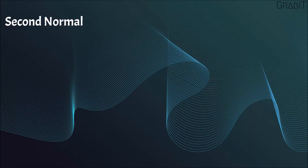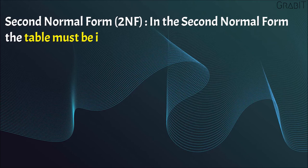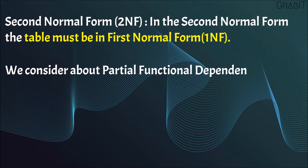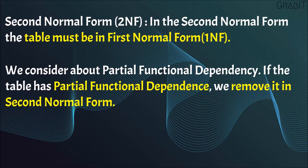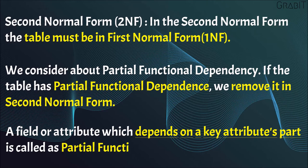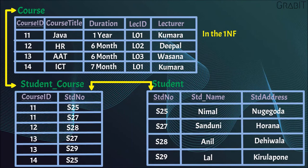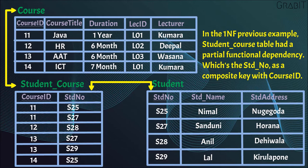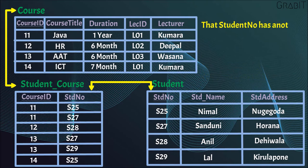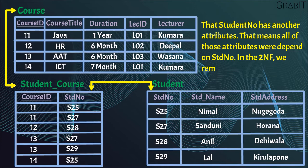Second Normal Form (2NF): In the Second Normal Form, the table must first be in First Normal Form. Here, we consider Partial Functional Dependency. If the table has Partial Functional Dependency, we remove it in Second Normal Form. A field or attribute which depends on part of a composite key attribute is called Partial Functional Dependency. In 1NF, the Student Course Table had a Partial Functional Dependency — Student Name and Student Address depended only on Student Number, not the full composite key of CourseId and Student Number. In 2NF, we remove them by creating a new table called Student.